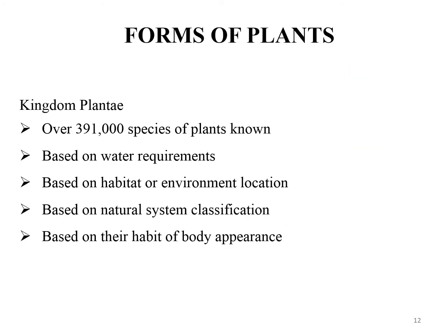Around 391,000 species of plants are known. We see a huge variety of plants all around us, among which some are terrestrial and some are aquatic. Despite this variety, they all share the same basic paths and functions, yet appear unique with different types of roots, stem, leaves, flower, fruit, seed, and with different sizes ranging from microscopic to very large. The classification of plants is mainly based on several factors: water requirement, habitat or environmental location, natural system of classification, and habit of body appearance.